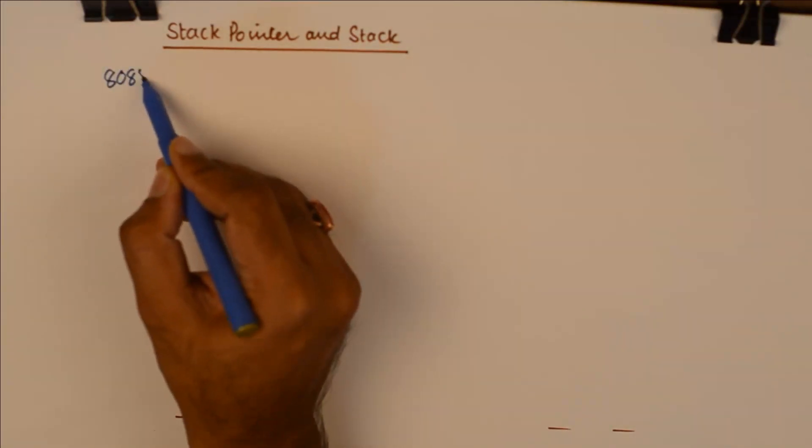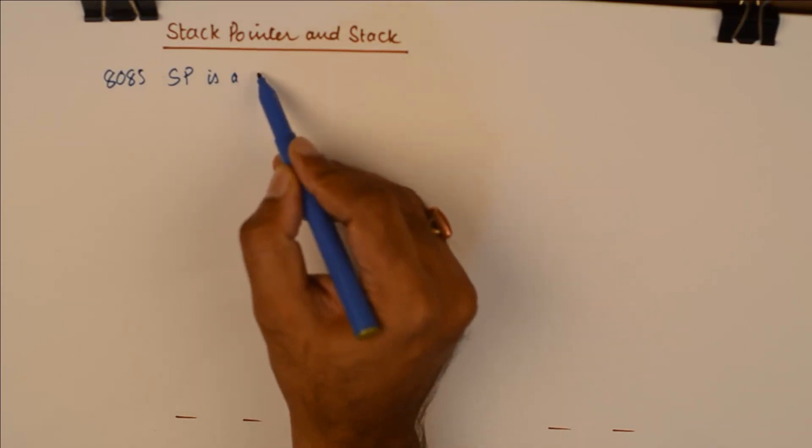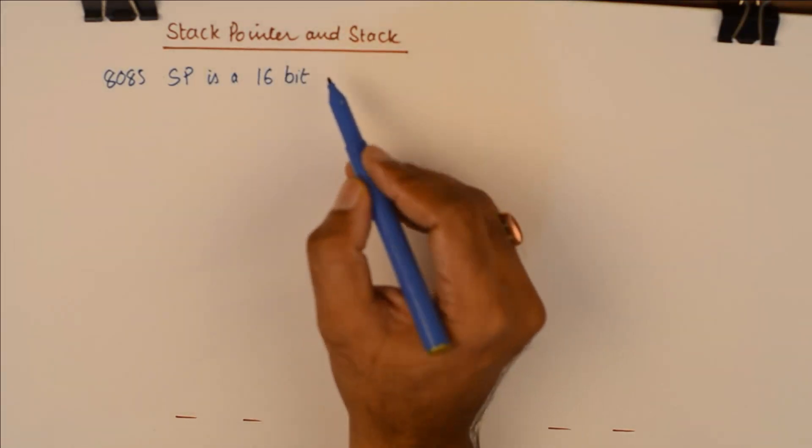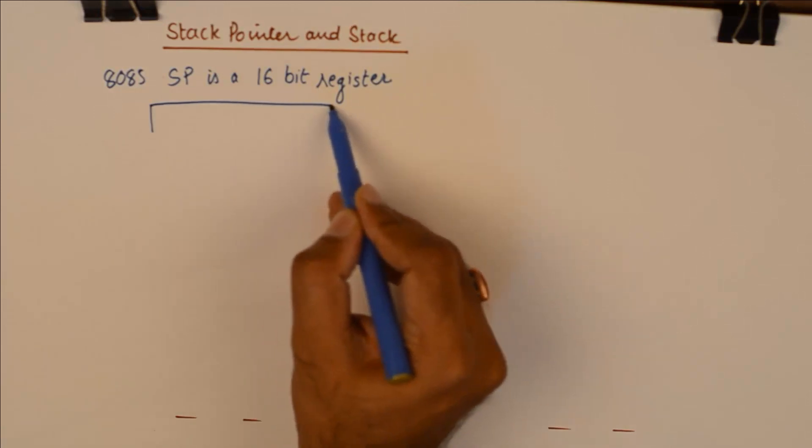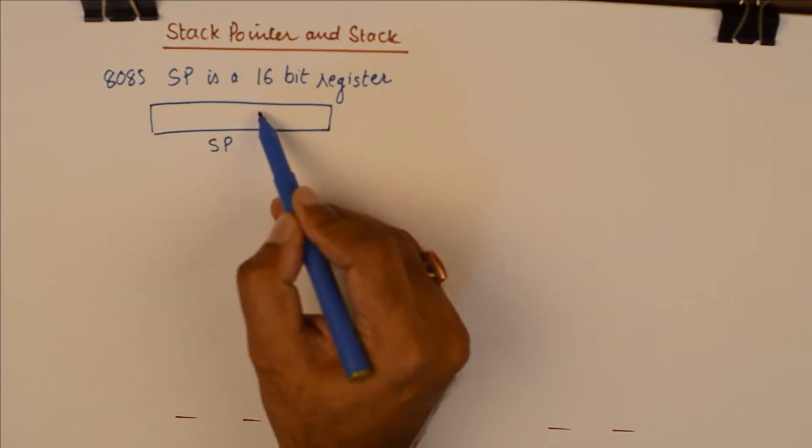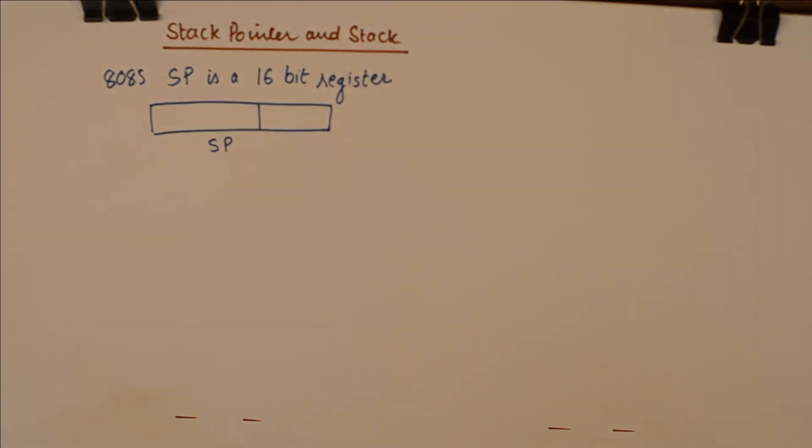Now I will take up the study of stack pointer from the context of 8085. So in 8085, stack pointer is a 16 bit register. Being a 16 bit register you can enter a 16 bit number into it that will point to a memory location which is connected to 8085, and that memory location will be the top of the stack.